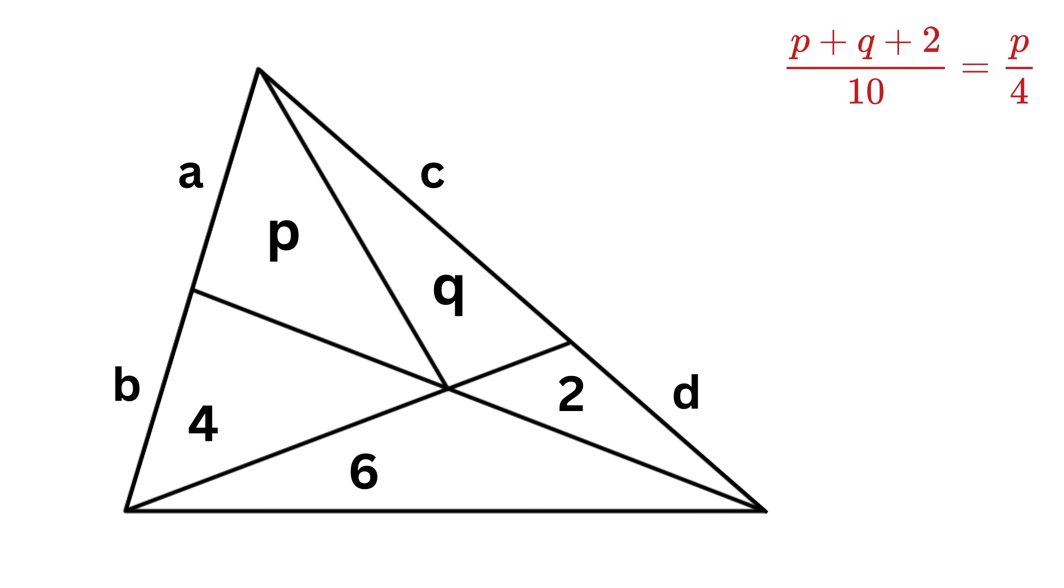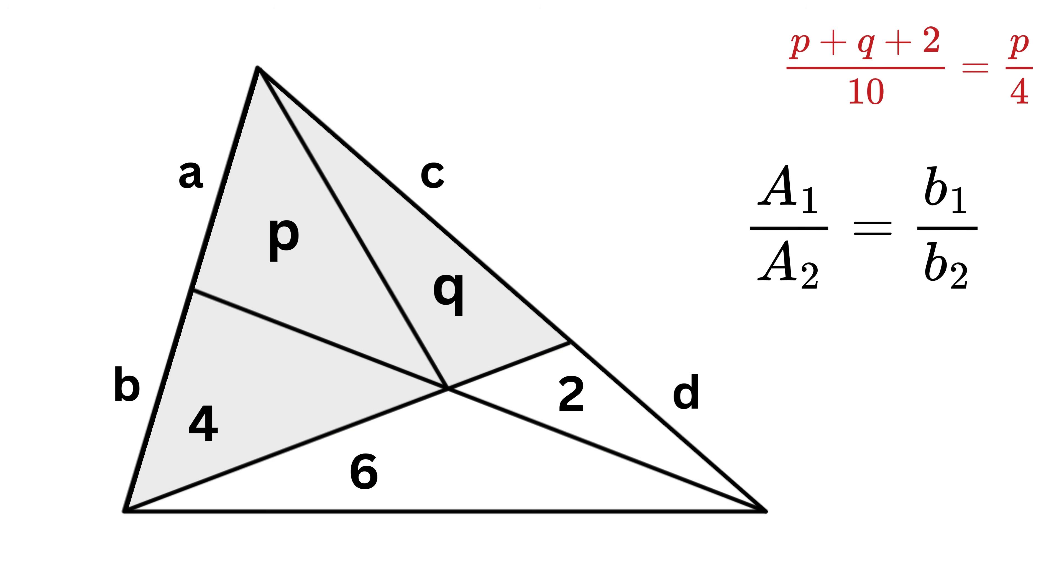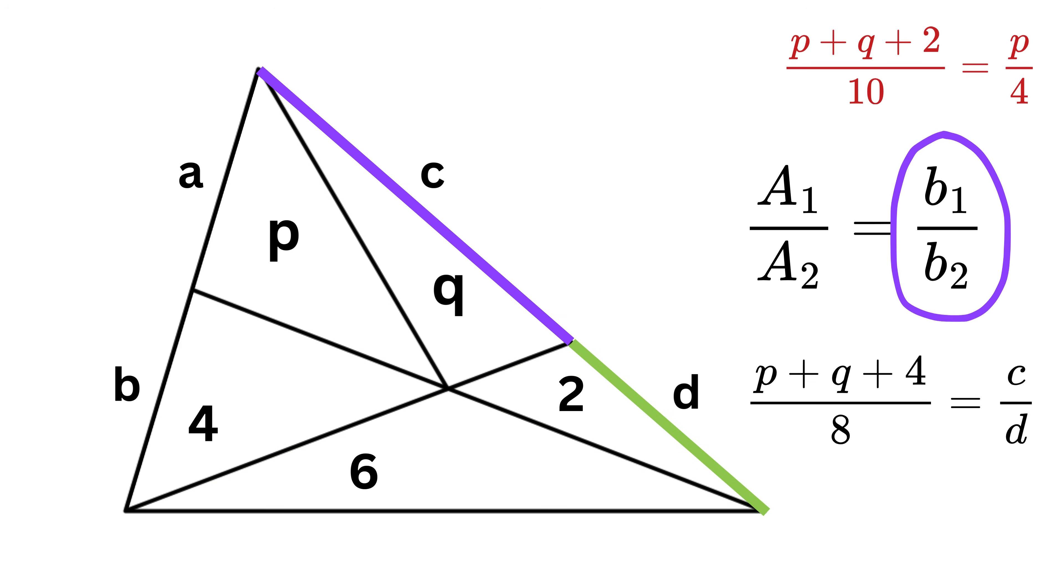Now without calculating much, can you quickly tell me how we can get the other relation? It's simple. Look at these two triangles. Similar as before, you can see that both of them have the same height, which is this. So, the ratio of area of both these triangles will be the same as the ratio of their bases, or area of this triangle is P plus Q plus 4 over area of this triangle is 2 plus 6, or 8 equals C over D.